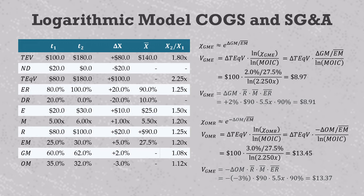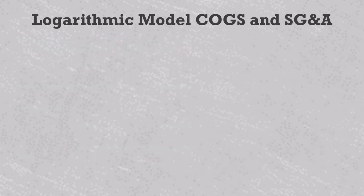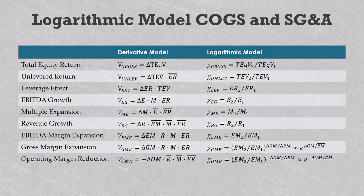Here are our value creation starting points in both the derivative model, which gives us value creation in dollars, and the logarithmic model, which gives us value creation in equity return multipliers. The derivative model values are more intuitive but each requires more numbers — at least two numbers for each of the deltas and averages. The logarithmic model values are less intuitive but easier to calculate, and we start to lose that convenient x2 over x1 form as we go deeper down into the capital structure or the balance sheet, with value drivers like gross margin expansion or operating margin reduction that are related to one another by addition and subtraction.